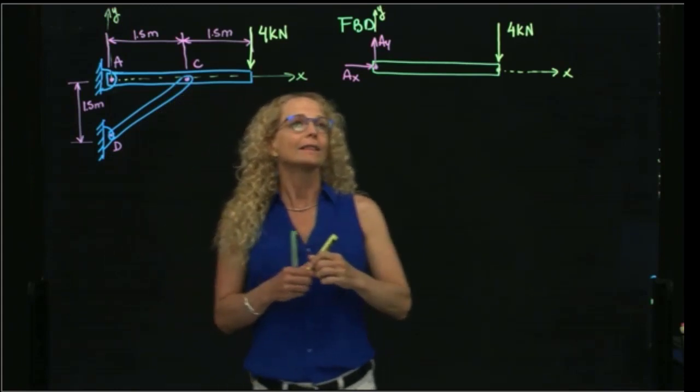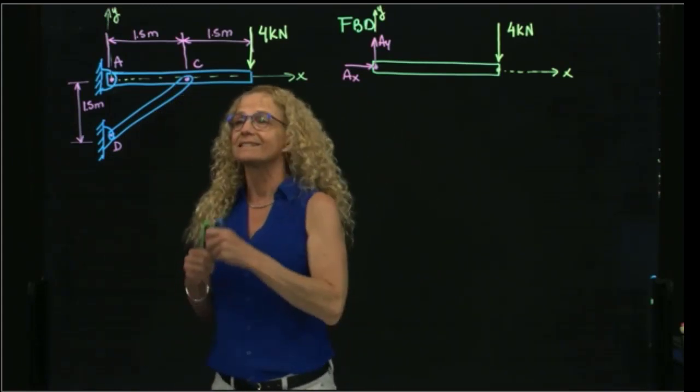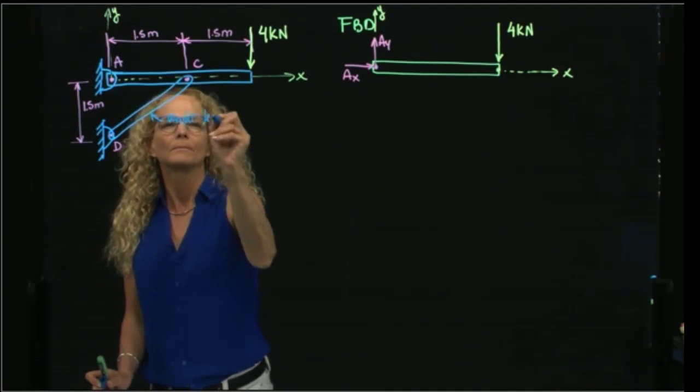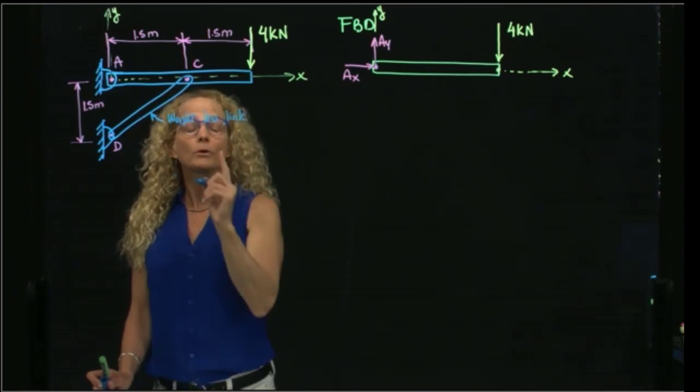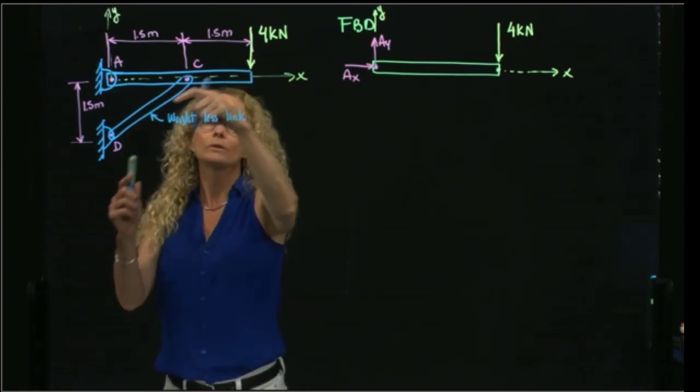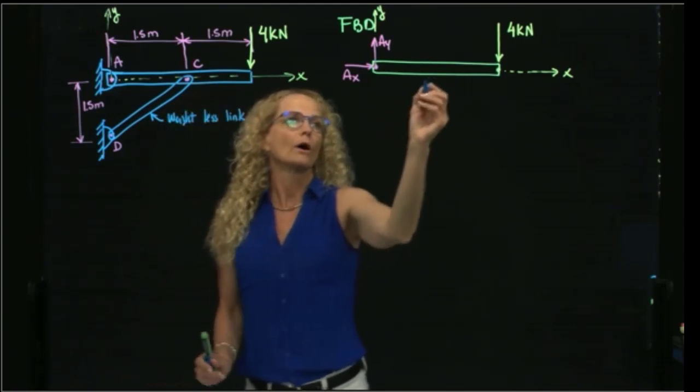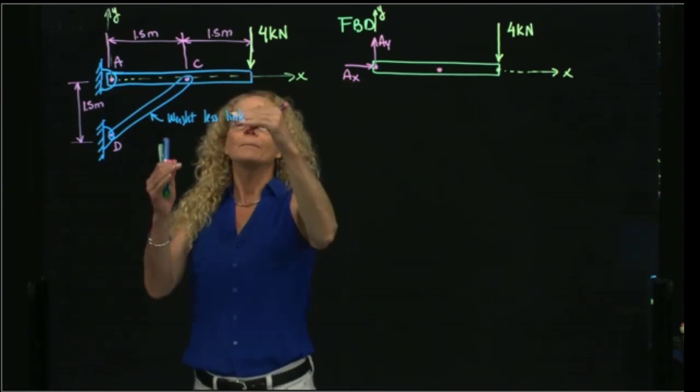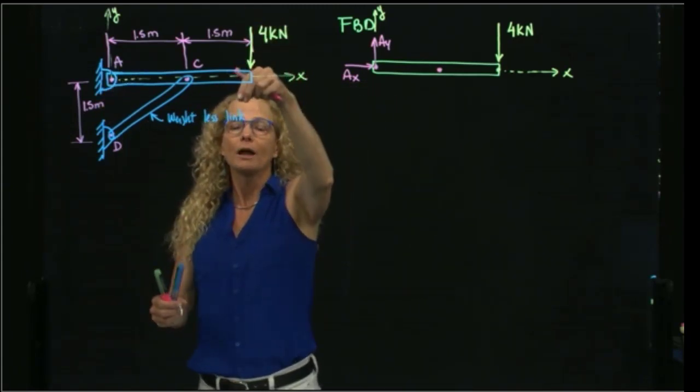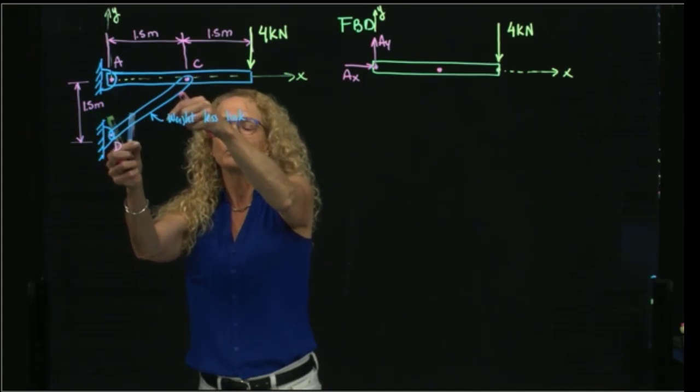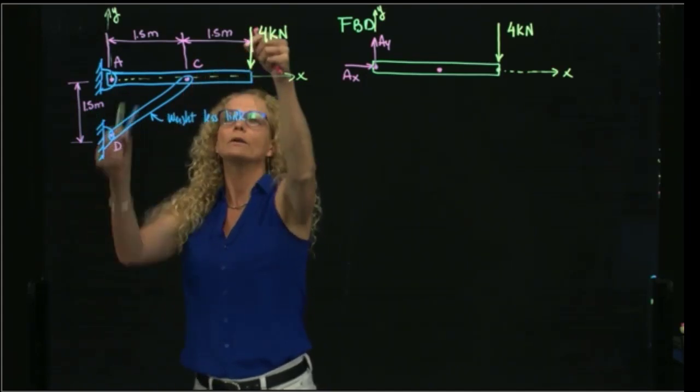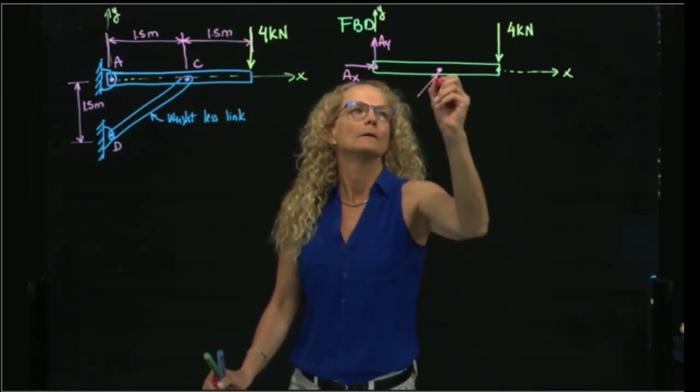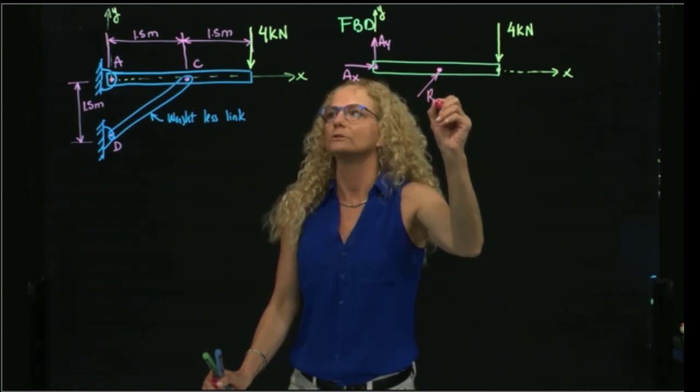And then I have the reaction at C. Since this is a weightless link, it produces only a reaction along this member. So I will have a reaction in this direction. So we can imagine that this is pushing down. Therefore, this weightless link is going to be in compression. So it's sustaining the weight and this force of this beam. And I will call it reaction CD.